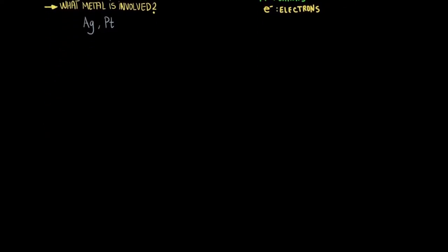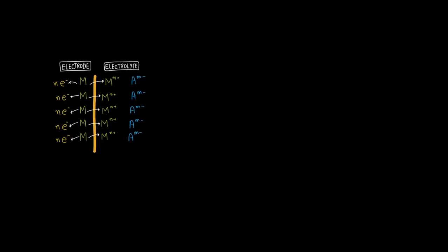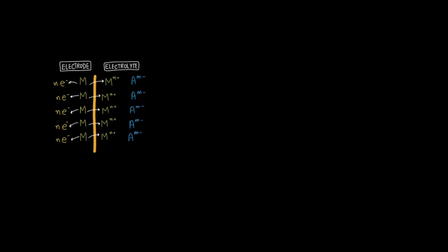Here is a schematic of the interface again. As you can see, the metal atom loses an electron and becomes a cation, which leaves the electrode to join the anion in the electrolyte solution. The lost electron, on the other hand, stays in the electrode. Naturally, this forms a charged double layer where you accumulate a negative charge at the electrode and a positive charge in the electrolyte.